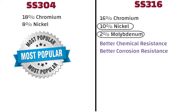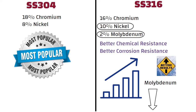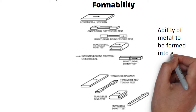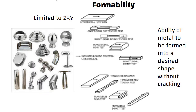One can think that if we increase the content of molybdenum in SS316, can we get better results? The answer is, if we increase molybdenum content in SS316, it can have serious consequences on formability. Formability means the ability of a metal to be formed into a desired shape without cracking. That's why molybdenum content is limited to 2%; otherwise, we won't be able to form curved and complex designs from SS316 stainless steel.